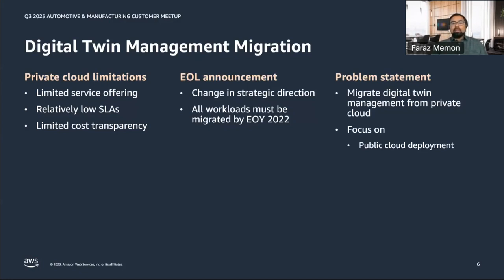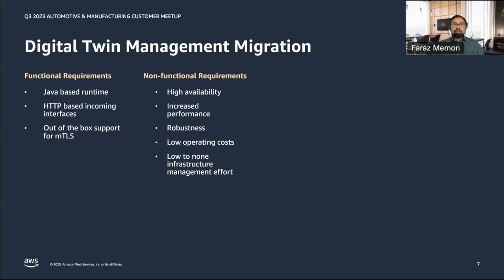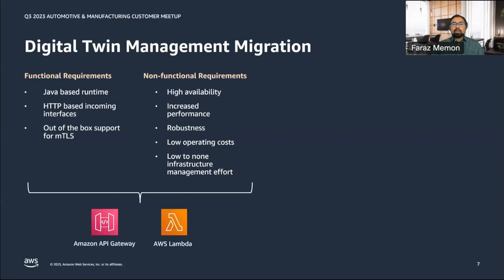We had to migrate our digital twin management from the private cloud to a new destination, and we quickly agreed to focus on public cloud deployment with AWS as the preferred public cloud. For the migration we defined functional and non-functional requirements. Functional requirements included a Java-based runtime, HTTP-based incoming interfaces, and out-of-the-box support for mutual TLS. Non-functional requirements included high availability, increased performance, robustness, low operating cost, and — one of the most important — low to non-existent infrastructure management effort. We quickly concluded that our target architecture could be serverless, based on Amazon API Gateway and AWS Lambda.